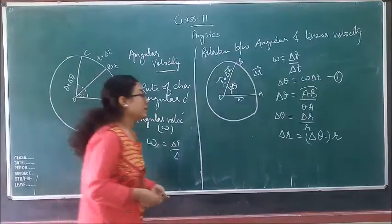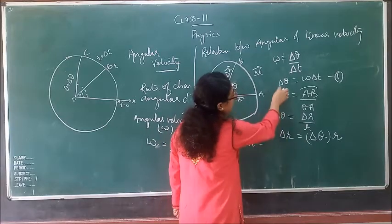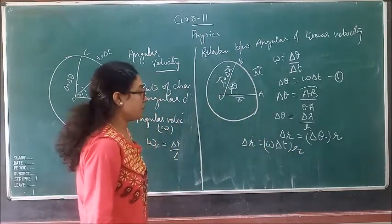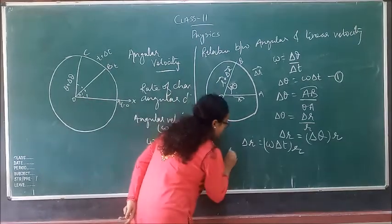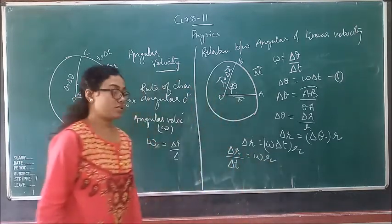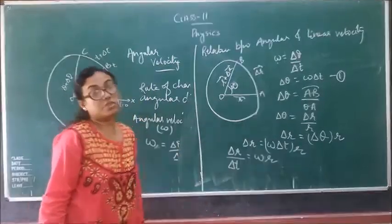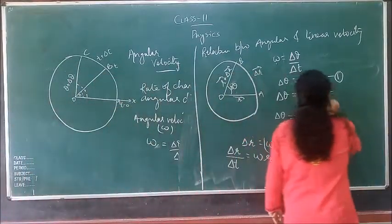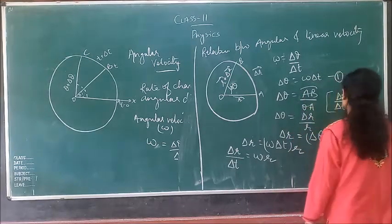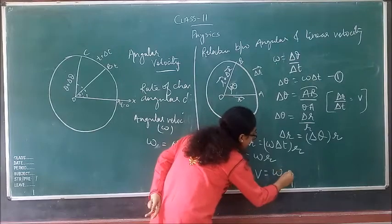So delta r equals delta theta times r. Substituting delta theta = omega delta t, we get delta r = omega delta t times r. Dividing both sides by delta t: delta r / delta t = omega r. Since rate of change of displacement with respect to time is velocity, we get v = omega r.